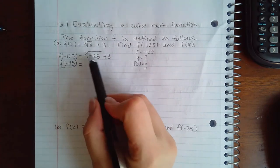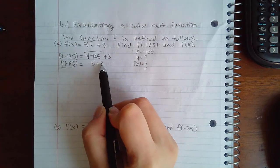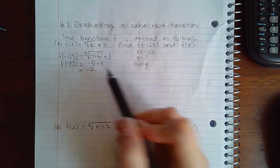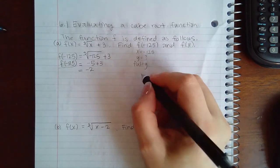When x is -125, this is -5 plus 3, which is actually -2. So the answer to this problem is -2.